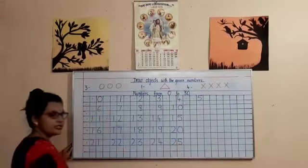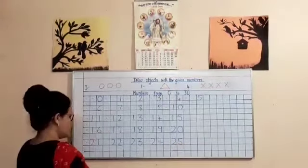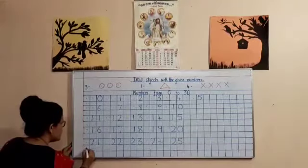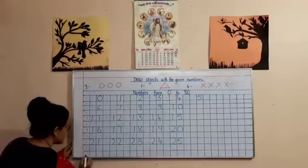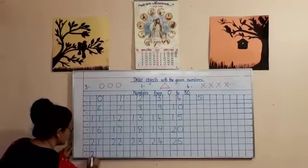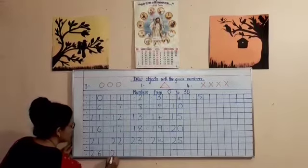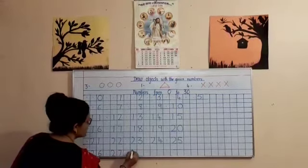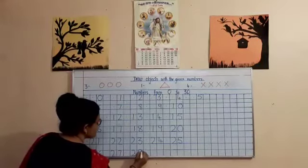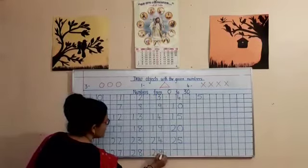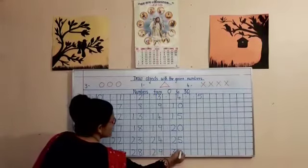What comes after 25 children? 26, yes, very good. Put a dot over here, leave this line, come to the next line, put a dot and write 26, dot, 27, dot, 28, dot, 29, dot, 30.